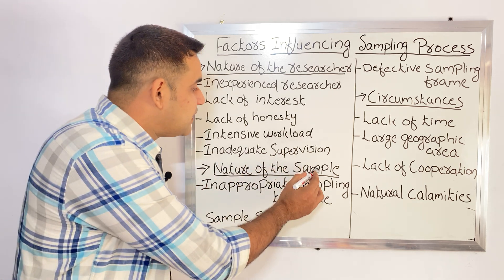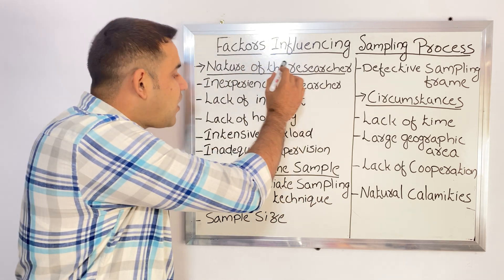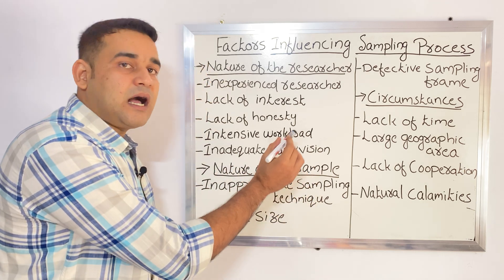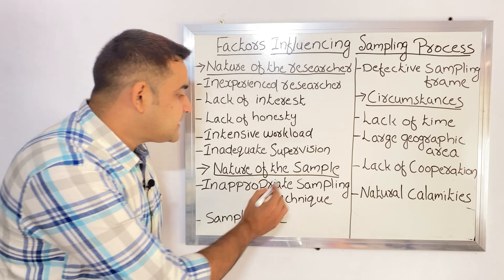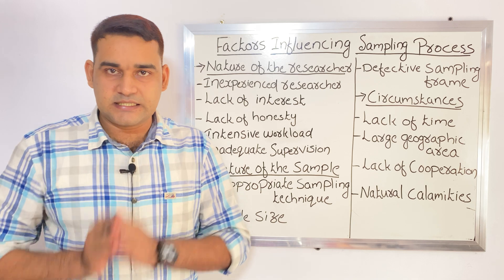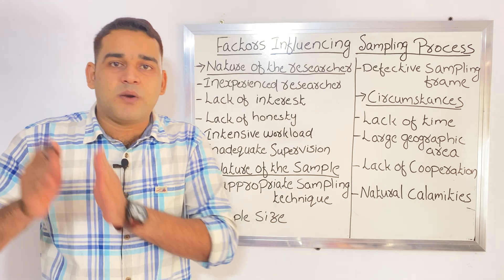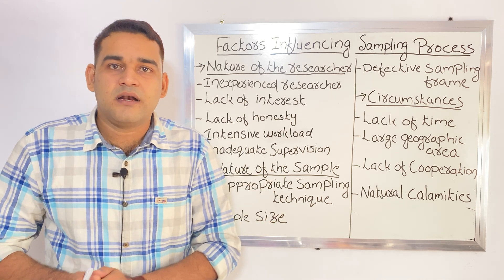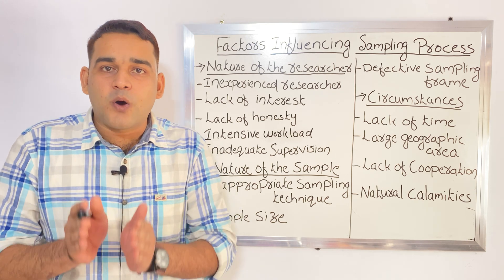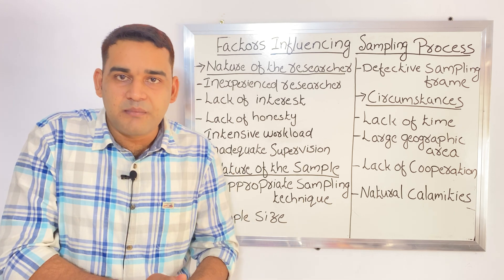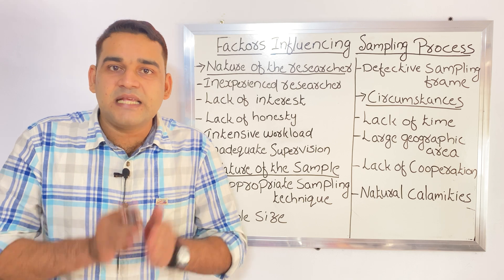Next one is nature of the sample. The next factor going to affect the sampling process is nature of the sample — here related to the subject. First one coming under nature of the sample is inappropriate sampling technique. Different techniques are there in sampling: probability sampling and non-probability sampling, with many classifications under each. You have to select the proper sampling technique according to your study. If instead of selecting probability sampling you have selected non-probability sampling, that is also going to affect the sampling process because it is a wrong selection.